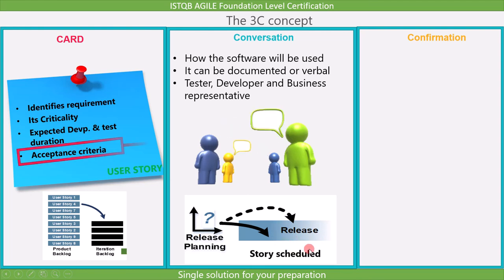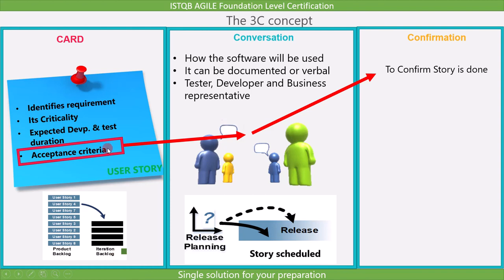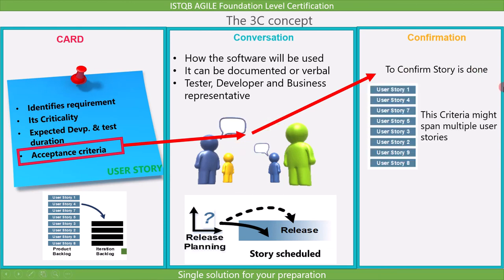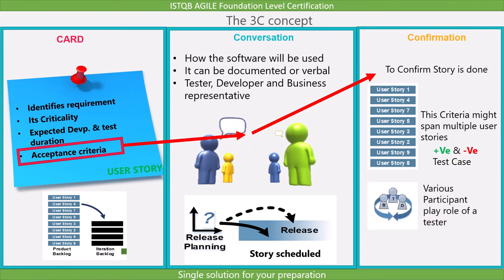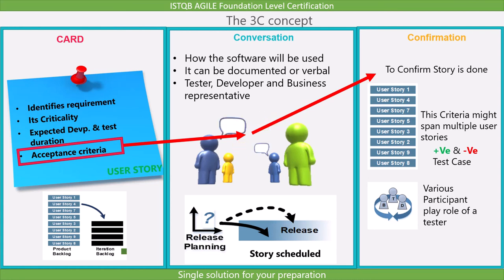The last element is confirmation. The acceptance criteria discussed in the conversation are used to confirm that the story is done. These acceptance criteria may span multiple user stories. Both positive and negative tests should be used to cover the criteria. During confirmation, various participants play the role of a tester, including developers as well as specialists focused on performance, security, interoperability, and other quality characteristics. The defined acceptance criteria should be tested and shown to be satisfied to confirm a story as done.